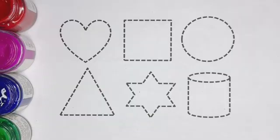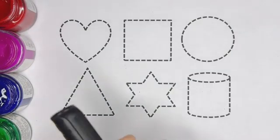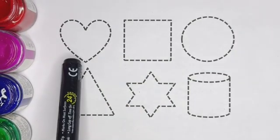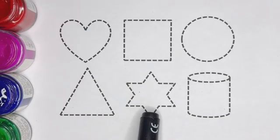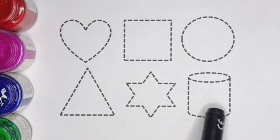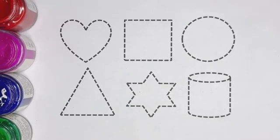This is black color. Heart, square, circle, triangle, star, magnetic disc. Kids, now let's got the shapes.